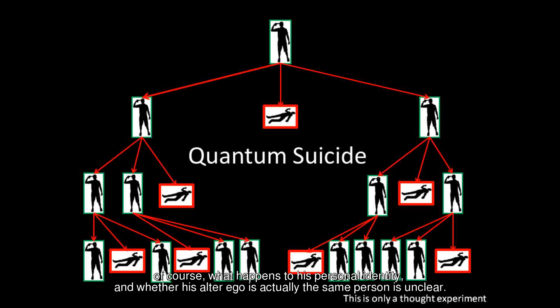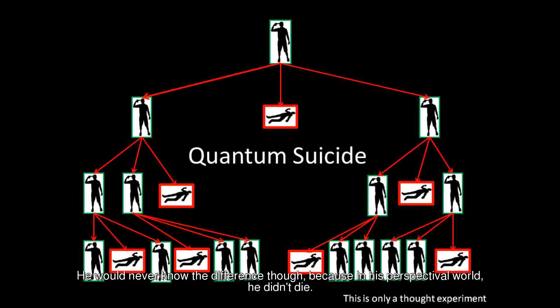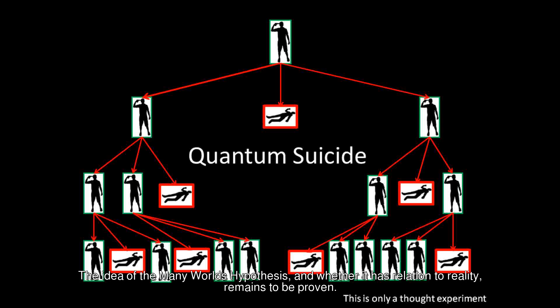Of course, what happens to his personal identity, and whether his alter ego in another world is actually the same person is unclear. He would never know the difference though, because in his perspectival world, he didn't die. The idea of the many-world hypothesis, and whether its relation to reality remains to be proven.